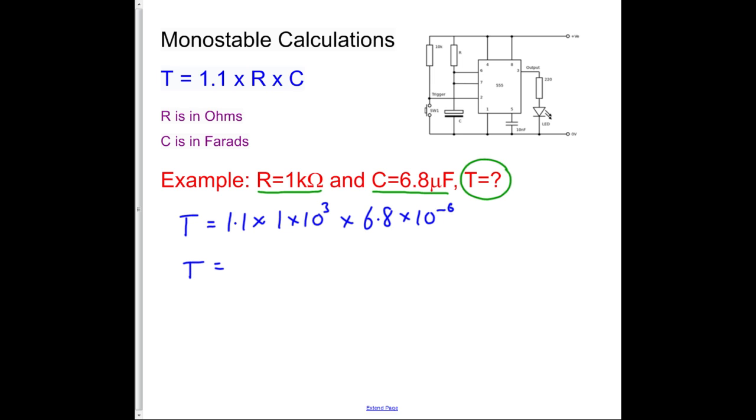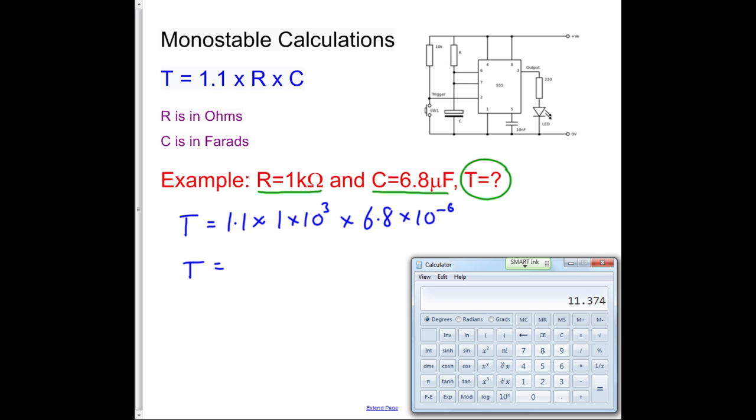I go T equals, and I find my Windows calculator, and this time I go 1.1, multiplied by 1, exponent 3, multiplied by 6.8.